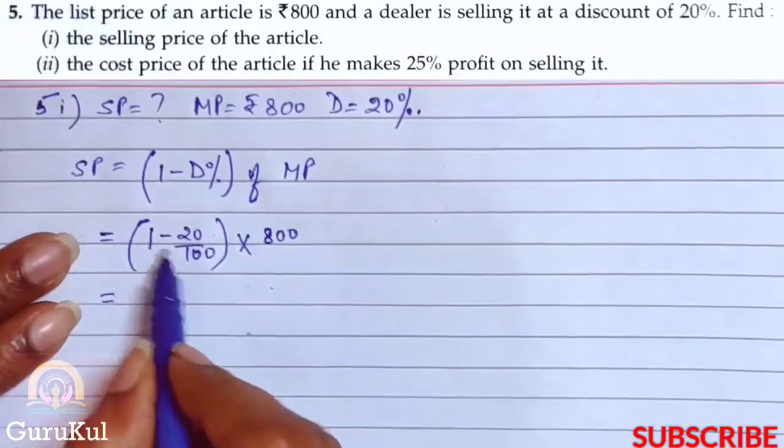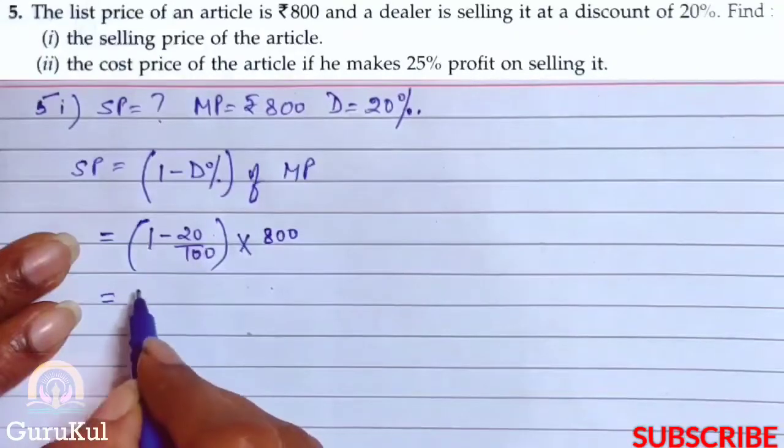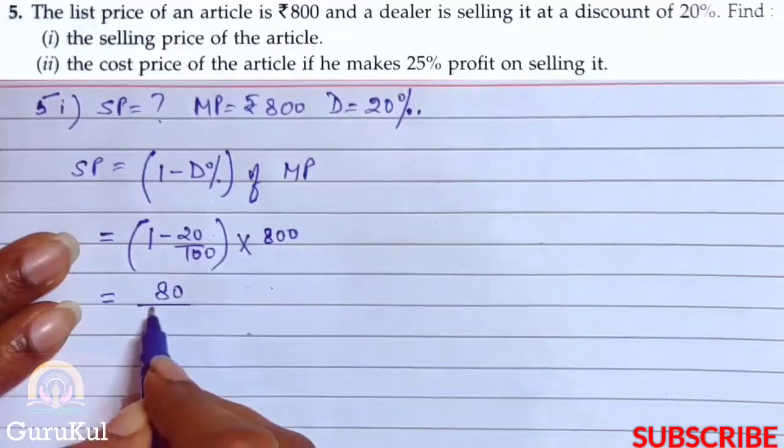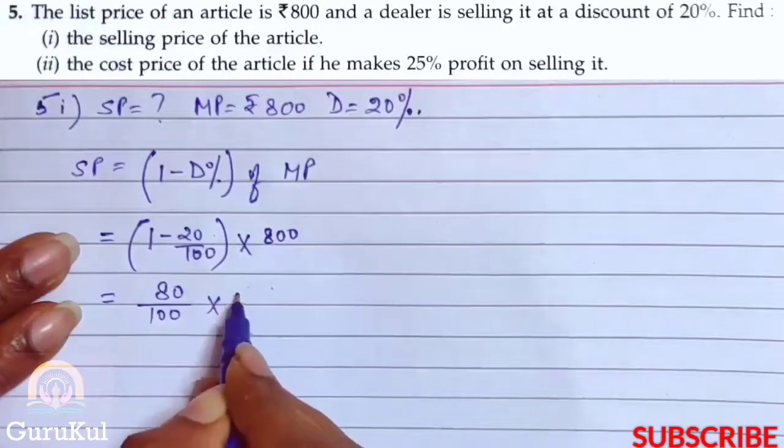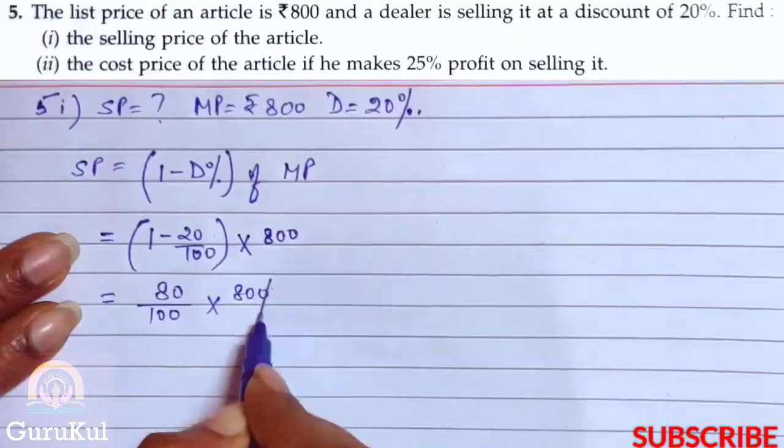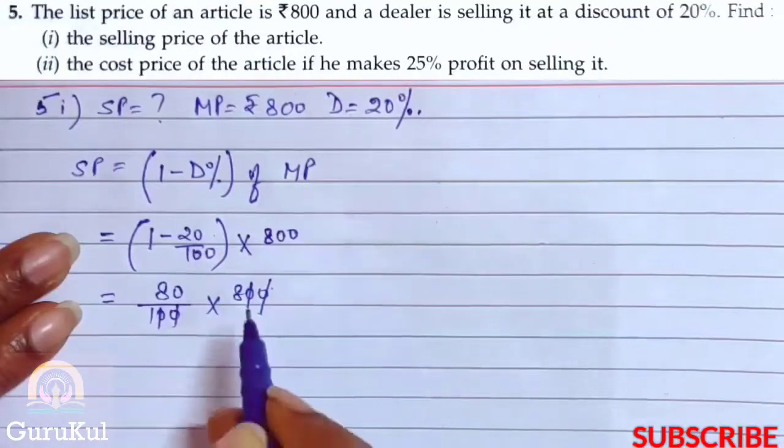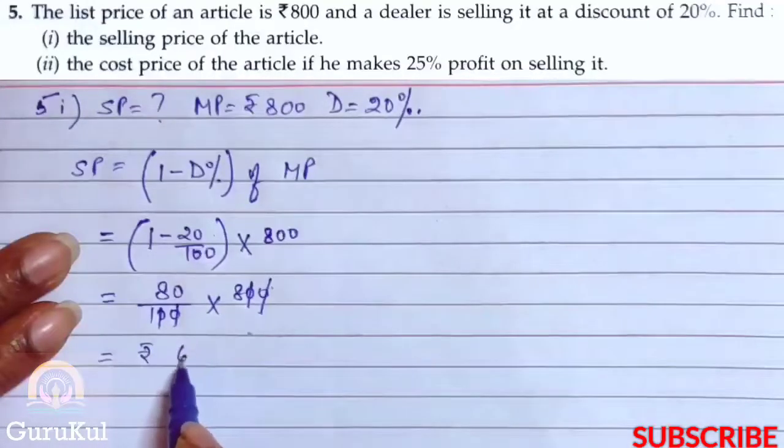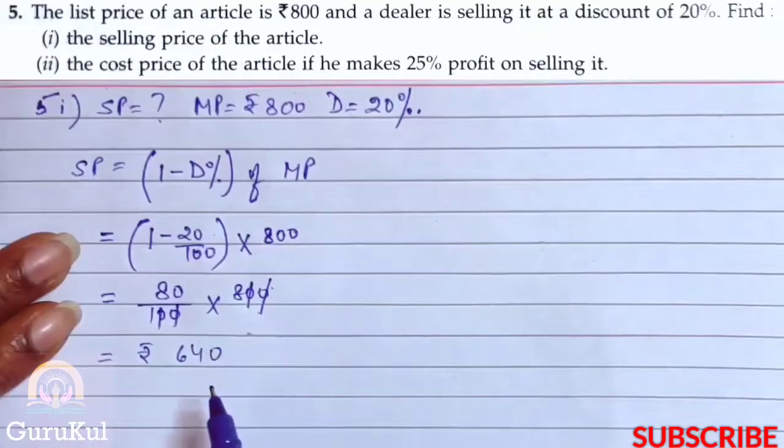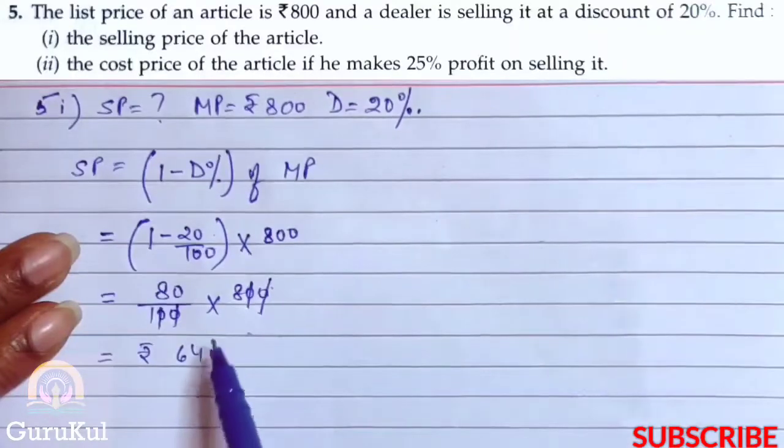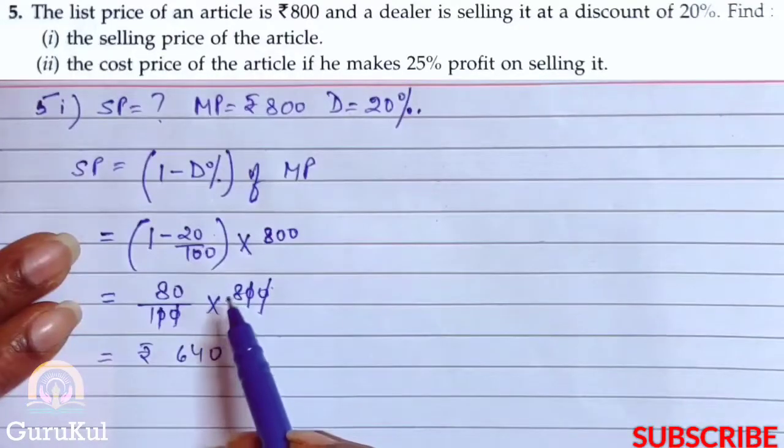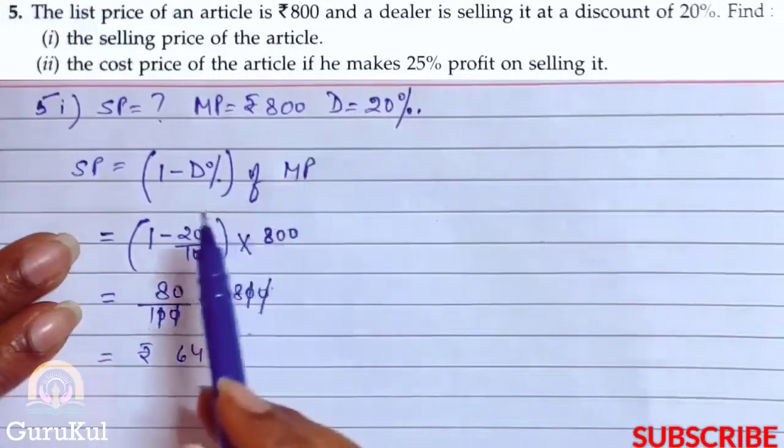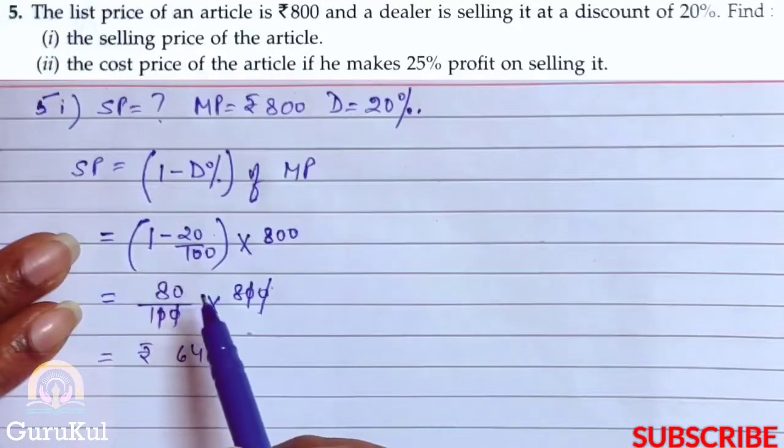Now let me proceed. So this will be 1 minus 20% of 800. That is 100 minus 20, that gives us 80 by 100 into 800. 0 and 0 got cancelled. So SP amount is 640. So this is the selling price of the article after giving a discount of 20%. First part of question number 5 is done.